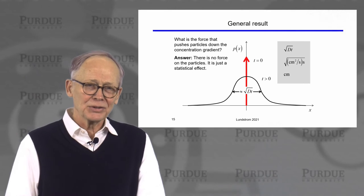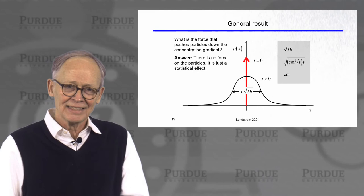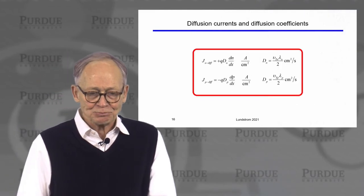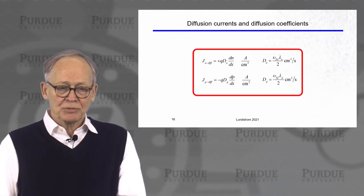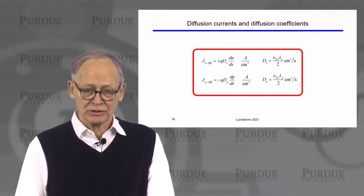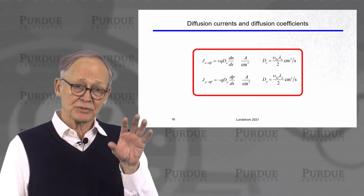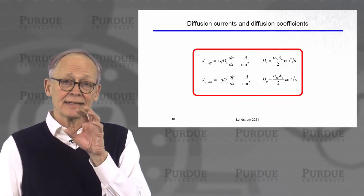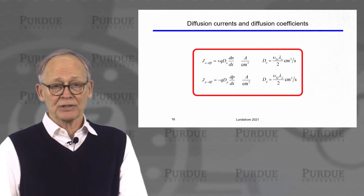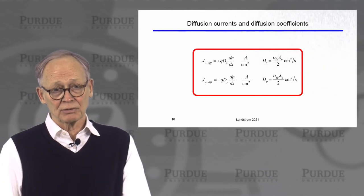You might wonder what force is pushing these particles from high concentration to low concentration. When we had drift current, there was a real force — the electric field pushing electrons or holes. In the diffusion case, there is no force. This is a purely statistical effect. Random thermal motion in the presence of a concentration gradient causes particles to move from high to low concentration. Sometimes people refer to a 'statistical force,' but there is no physical force driving diffusion.